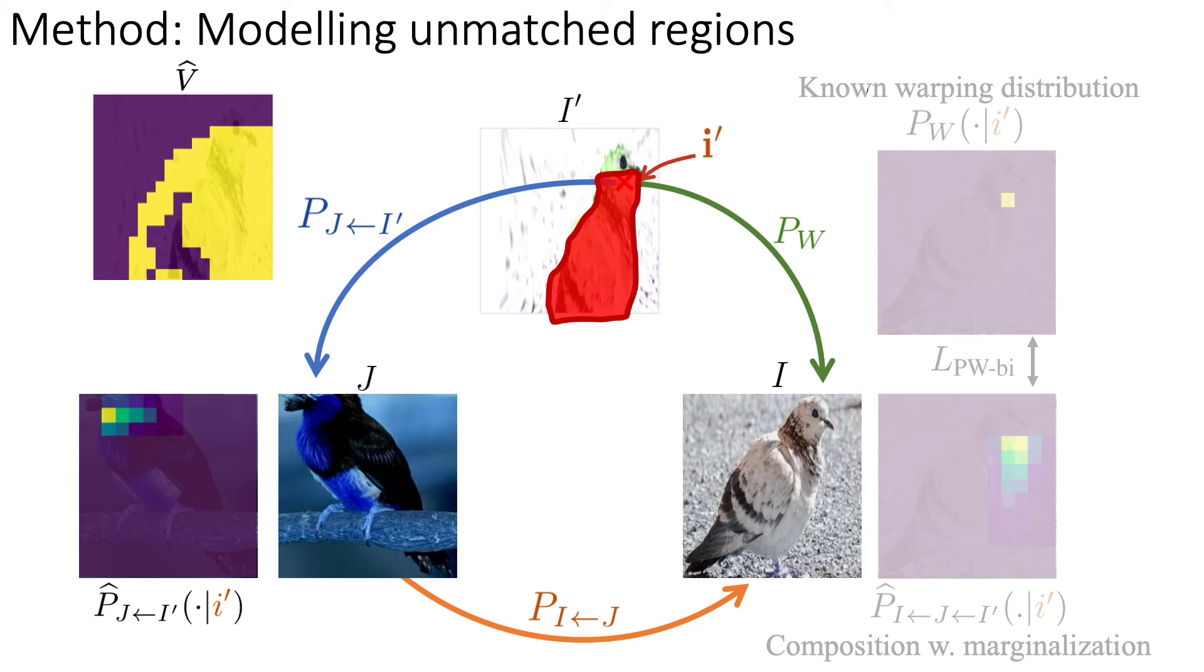So we propose two solutions. We estimate a visibility mask v and only apply the loss in v. We also explicitly model occlusions and non-matching regions into our probabilistic mapping by predicting the probability of a pixel to be occluded or unmatched in one image, given that it is visible in the other.